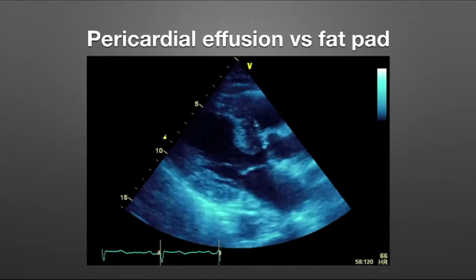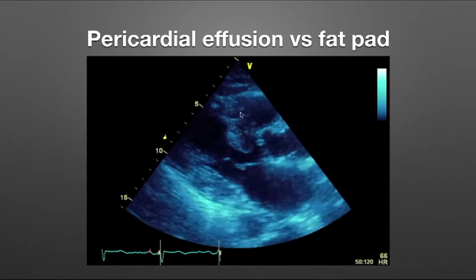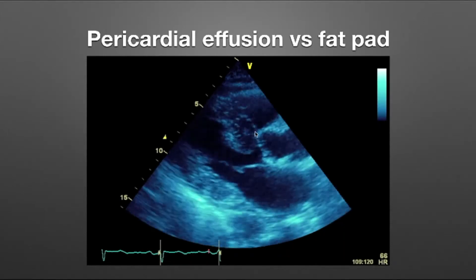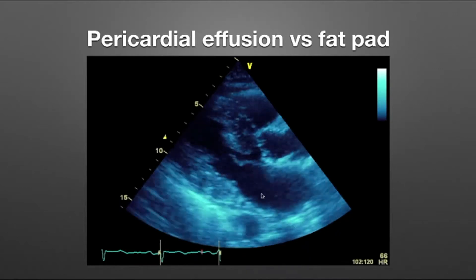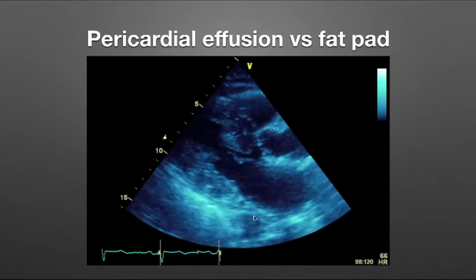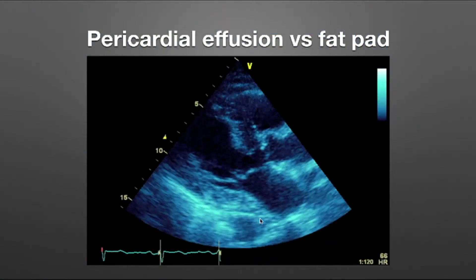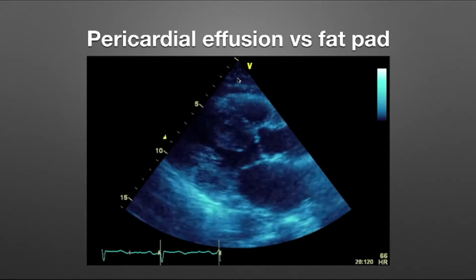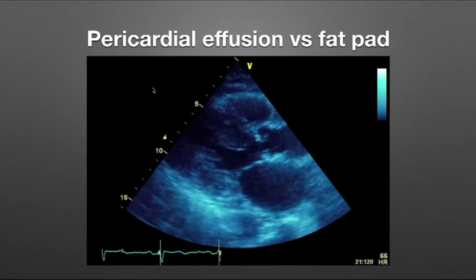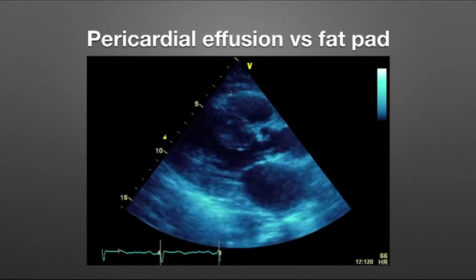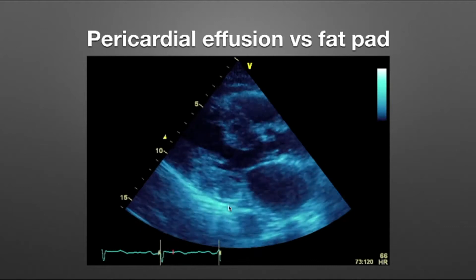Looking again in the parasternal long axis view for a fat pad example — we have the right ventricle, left ventricle, left ventricular outflow tract, aortic valve into the aorta, and the left atrium. We look at the descending aorta and can't see any clear fluid structure in front of it. What we can see anteriorly is an echogenic structure sitting just in front of the heart with a speckled appearance. With no effusion behind the heart, we'd say this is most likely a fat pad.